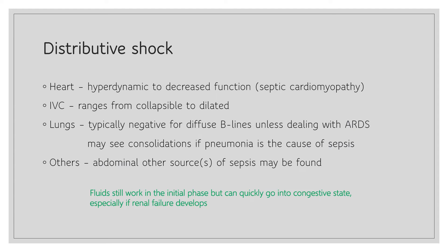Distributive shock can be tricky because it can present with varied findings. A patient who is initially hypovolemic can present with a hyperdynamic heart with decreased cardiac output, while many patients present with a hyperdynamic heart with increased cardiac output because of severe peripheral vasodilation in septic shock. A subset of patients may also present with decreased cardiac function if septic cardiomyopathy develops. IVC can range from completely collapsible to plethoric, and lungs are typically negative for diffuse B-lines unlike cardiogenic pulmonary edema — though in ARDS, B-lines can be found distributed throughout.